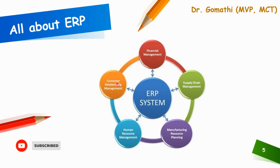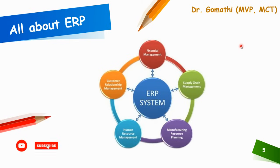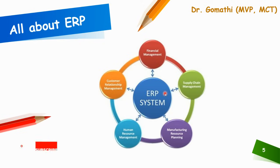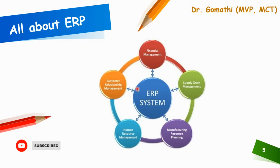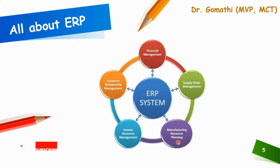Understanding ERP — since I've mentioned the word ERP, you should understand what ERP is first. An ERP system, which is an Enterprise Resource Planning System, is a centralized database that allows different departments within a company to access and share information seamlessly. This real-time visibility enables better decision-making, improved collaboration, and greater operational efficiency.